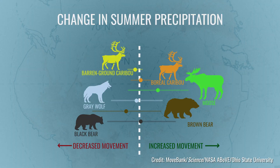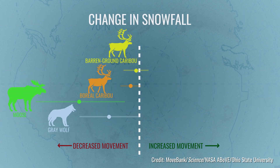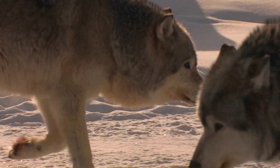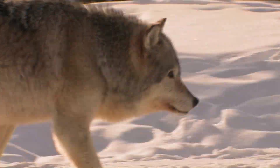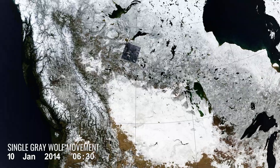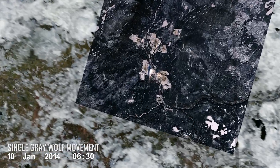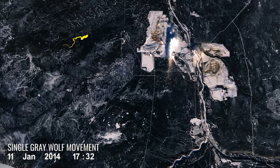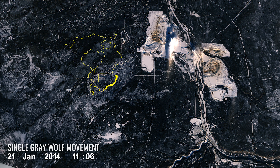We found that movement speeds of wolves, caribou, bears, and moose did not seem to be affected by heavy summer rains, but that wolves, moose, and boreal caribou moved less where there was higher snowfall in the winter. We also found that at higher temperatures, some species moved less while others were moving more, which could impact predator-prey relationships and ability to find food.